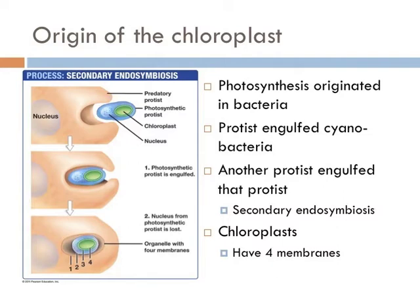Photosynthesis originated in bacteria. Then the spawn of that crafty eukaryote that engulfed the mitochondrion outdid itself by repeating the same process with the perfect complement to the mitochondrion — the chloroplast. However, there's one difference. If you look closely at a chloroplast, you'll see that it has not two membranes but four. One logical explanation is that another eukaryotic cell engulfed the cyanobacterium but didn't consume it.